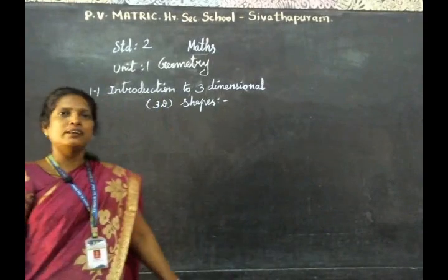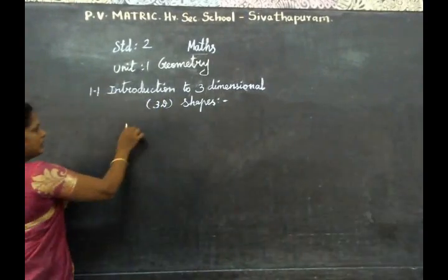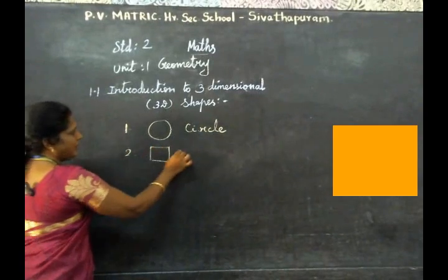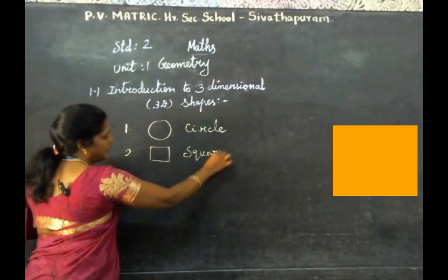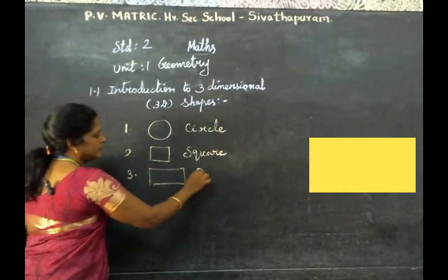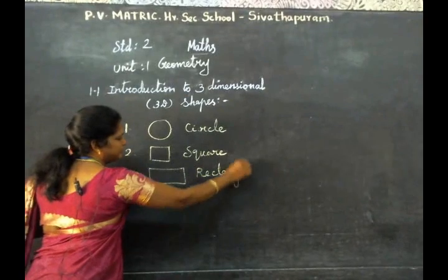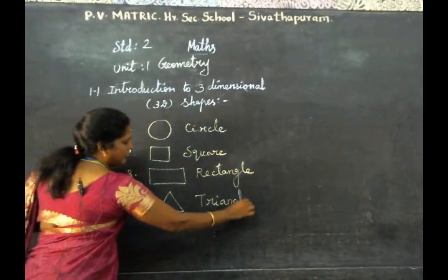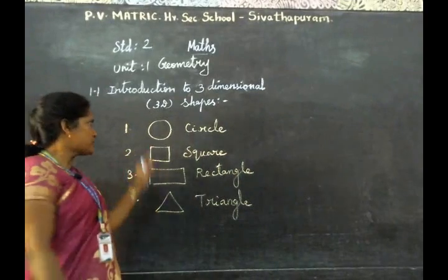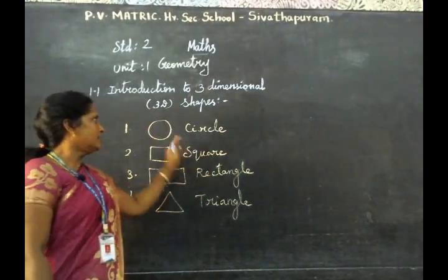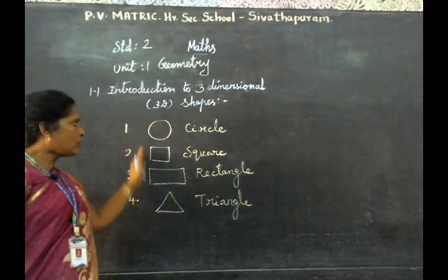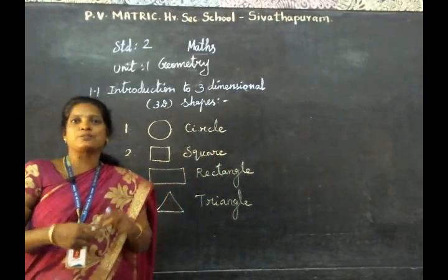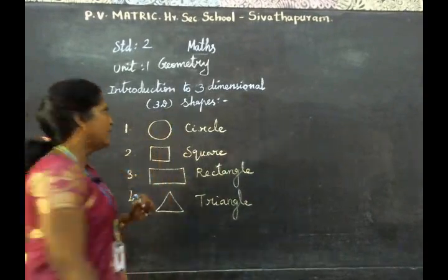Circle — this is circle. Square — this is square. Rectangle — this is rectangle. Triangle — this is triangle. Shapes: circle, square, rectangle, triangle. These are called 2D shapes. Now we go to 3D shapes.